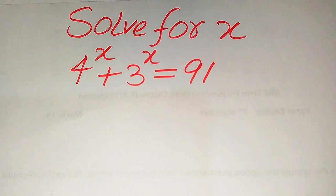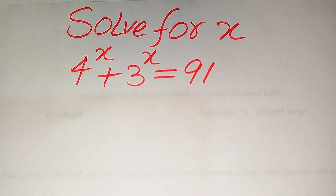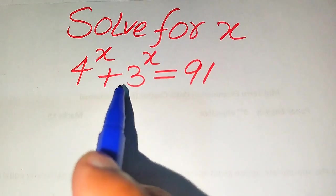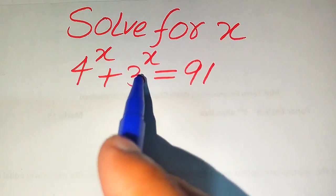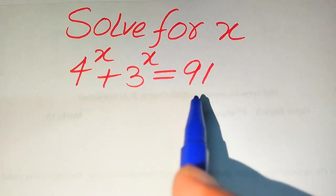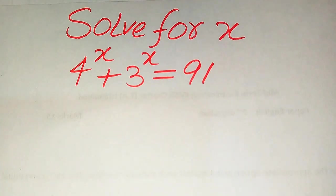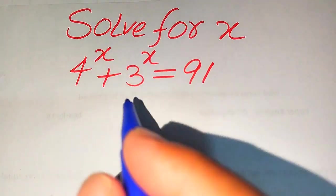Hello everyone. How to solve this problem for the values of x if we have 4 to the power of x plus 3 to the power of x is equals to 91, and we solve this problem for the values of x.